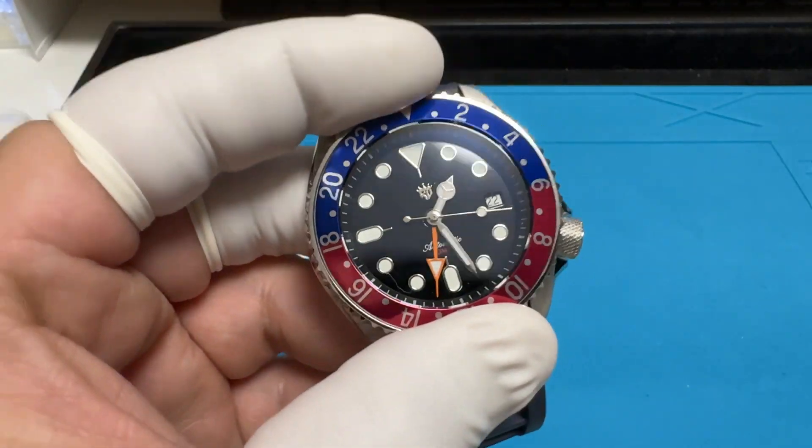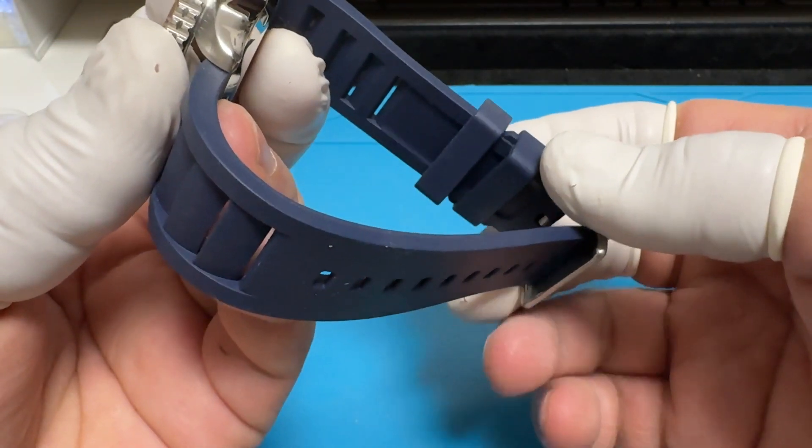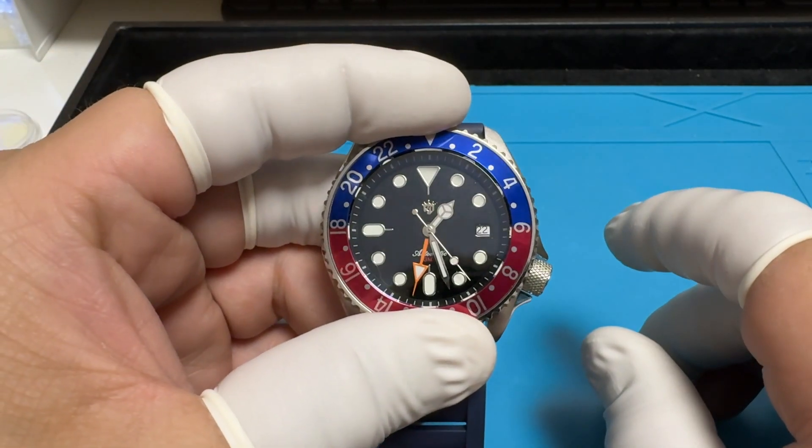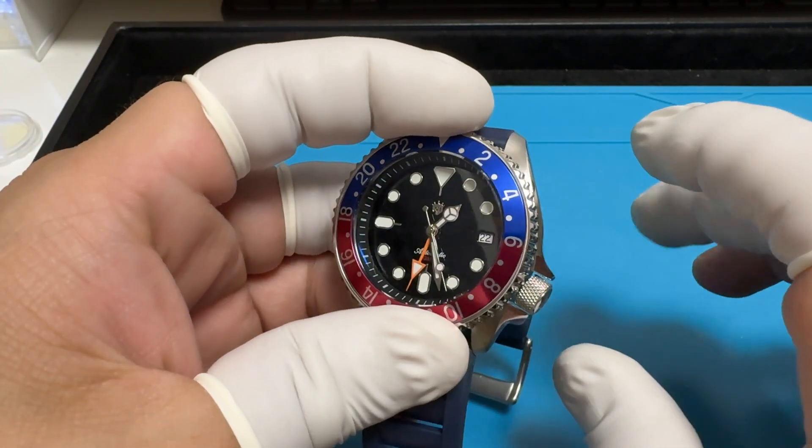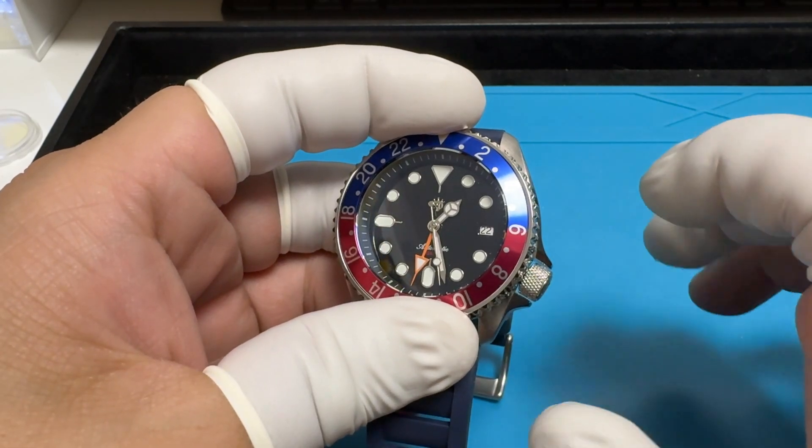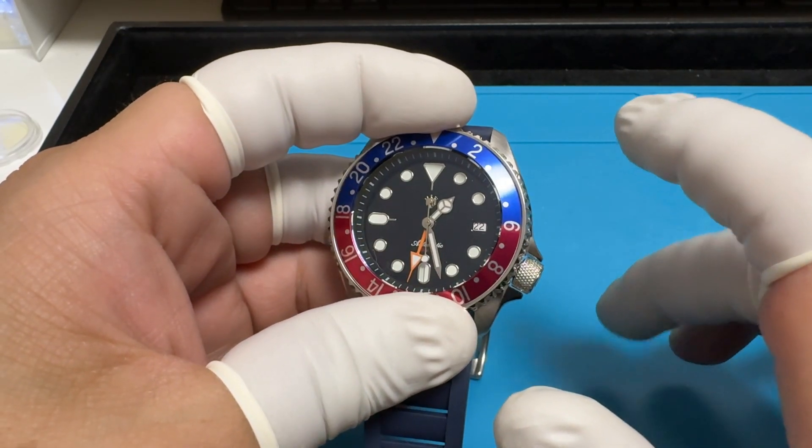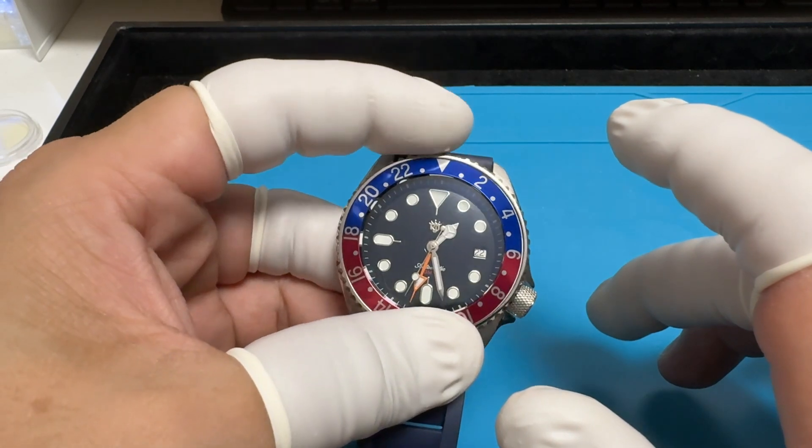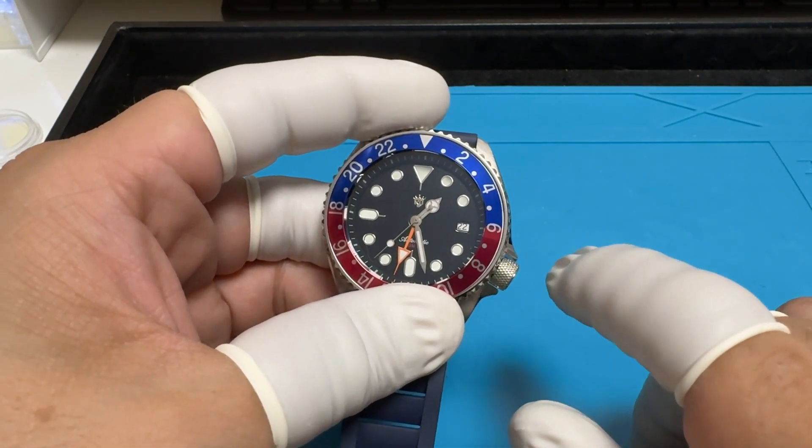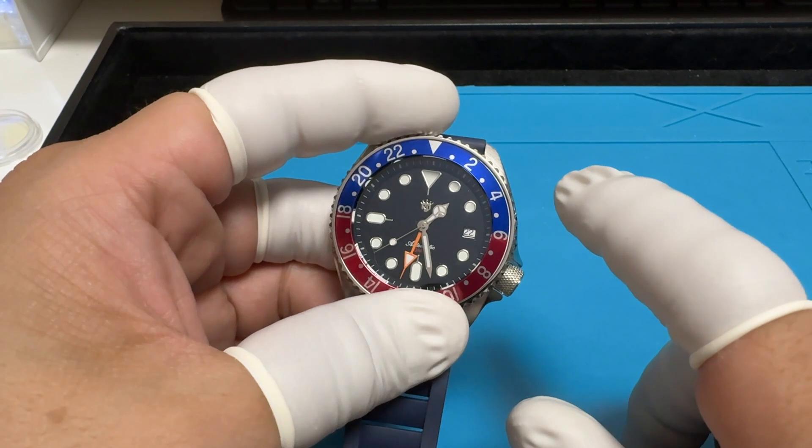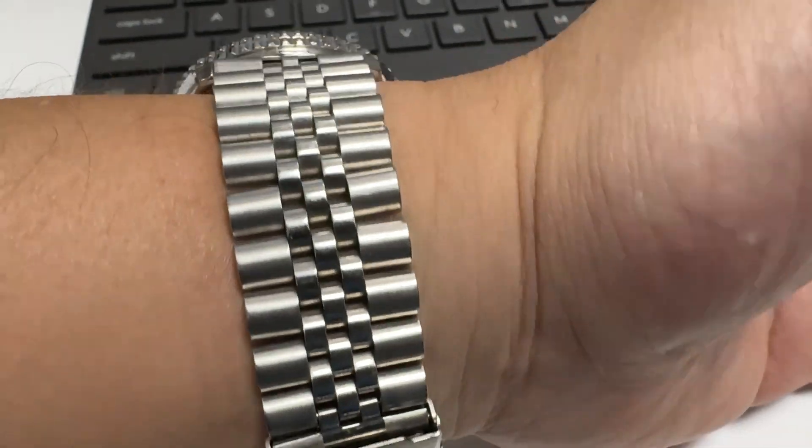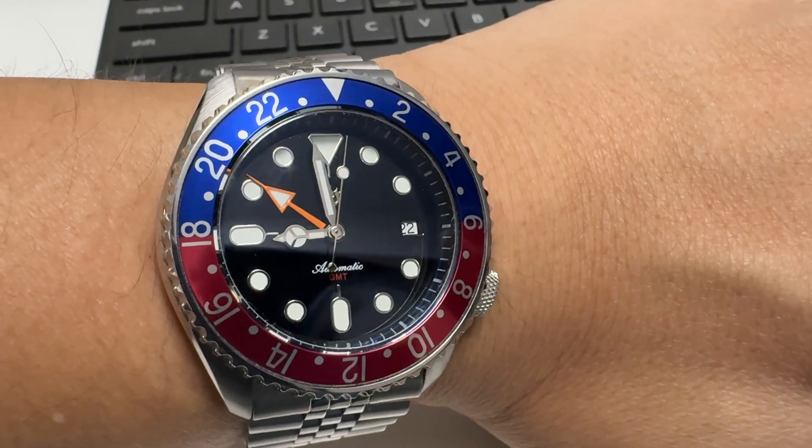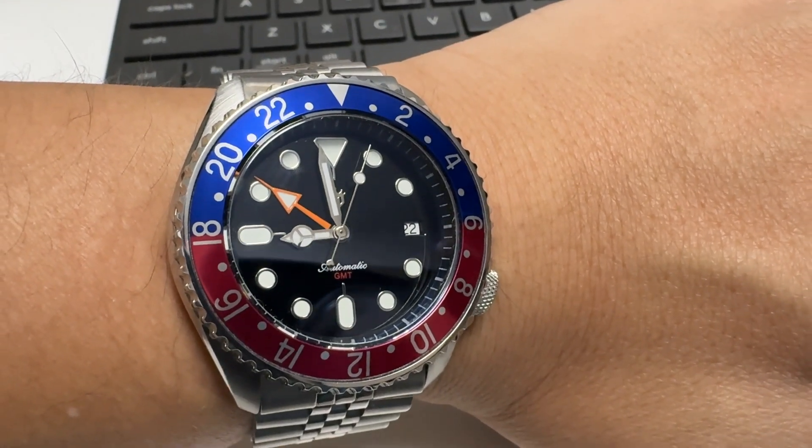This is the watch fully assembled on an FKM strap. I haven't really stuck the bezel insert on it yet, I'm just holding it in place. I haven't decided if I want the Pepsi style yet or the Batman, I'm not sure. I just wanted to put something there so you could see what it looks like with a 24-hour bezel. This is what it looks like on a jubilee style bracelet. I think most GMT watches look classier on a jubilee, so this is probably what I'm going to be using most of the time.